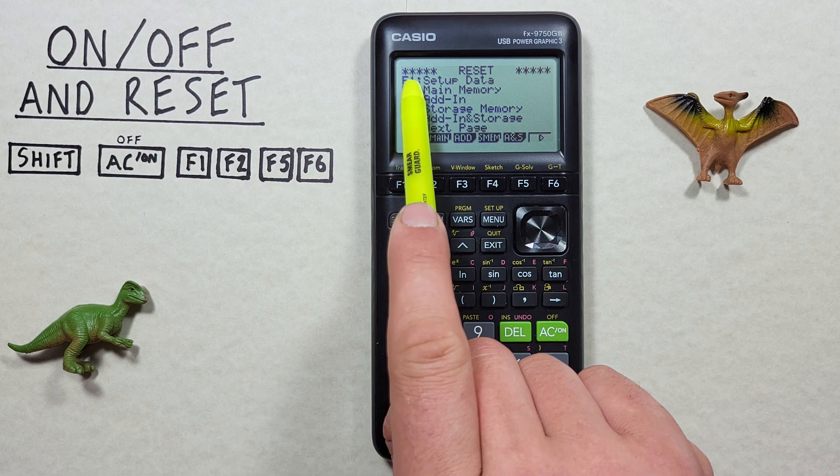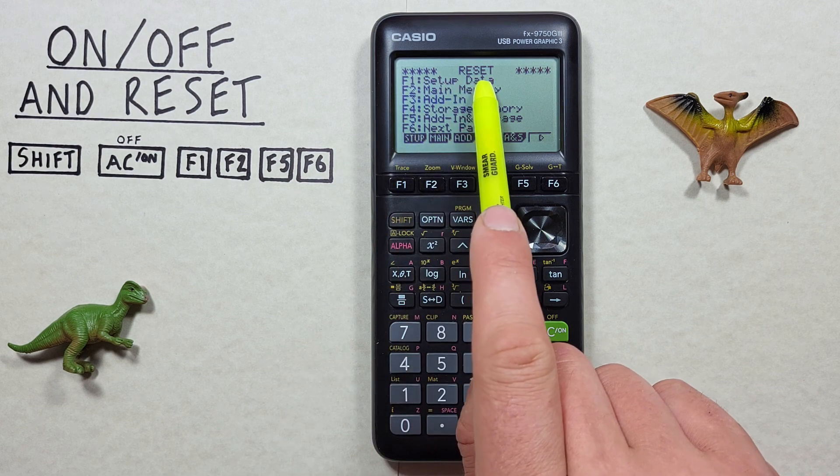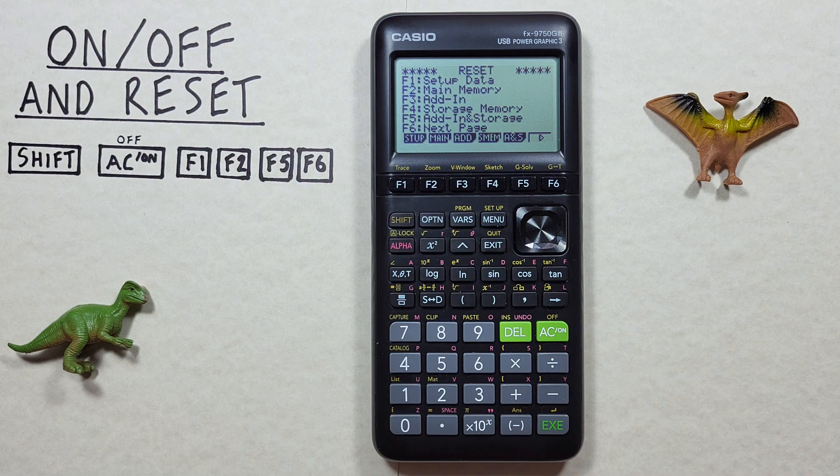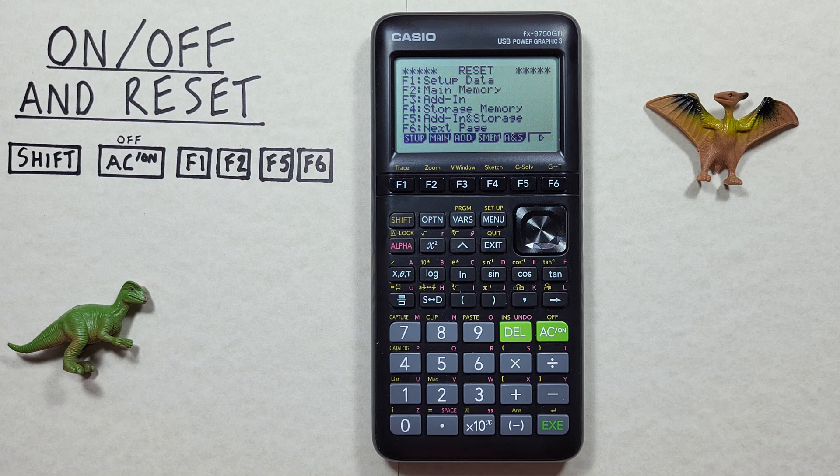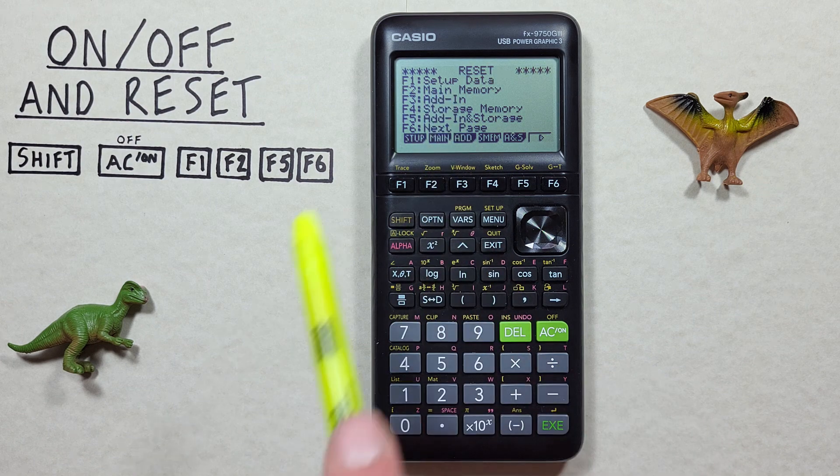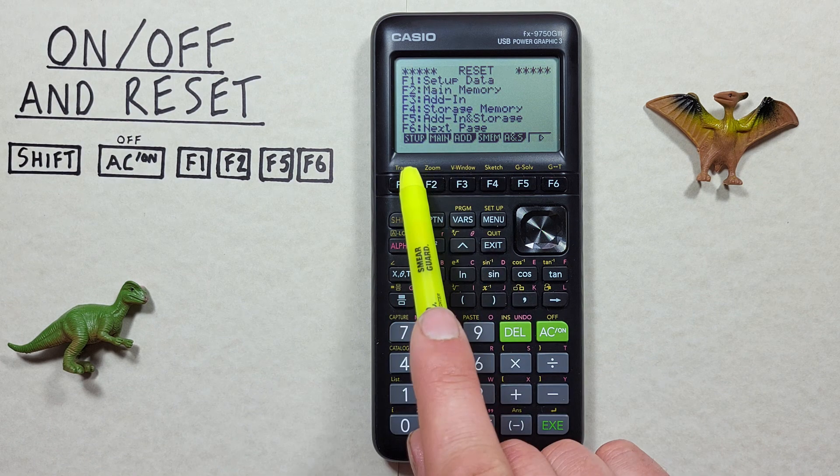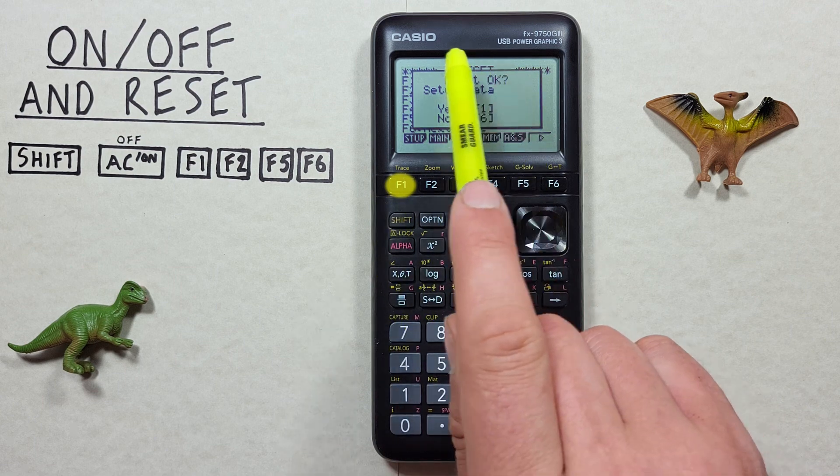First we have F1 reset setup data. This will reset our settings like degrees or radians mode, that sort of thing, and if we're getting weird results on a calculator this is probably the one we want to use. So to use that we press F1. It'll ask us to confirm.